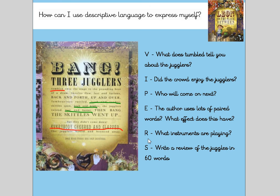R is our retrieve. The question is: what instruments are playing? So again we look through the text. It's talked about jugglers and skittles, and then we think about loud and louder — instruments make a noise. So what is it that made that noise? It was tambourines, so those would be our instruments. And finally, we've got S for summarise: write a review of the jugglers in 60 words. So that would be you thinking — did they do a good job? Examples of exactly what they did, written in 60 words or less.